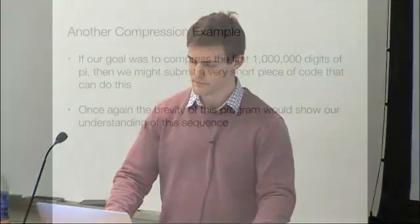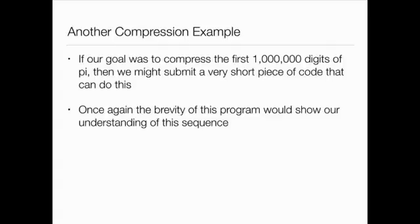A trivial example: imagine a big file with one billion sevens. We could compress it to just a few bytes by writing a small piece of code that, when run, reproduces the original document. Similarly, if the goal was to compress the first million digits of pi, we could write a short program to do this. How small we can make that program really expresses our understanding of the sequence.